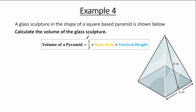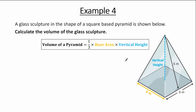First, we need the formula for the volume of a pyramid: volume equals one-third multiplied by base area multiplied by vertical height. For the base area, we find the area of the square: the length is 6 m, so the area equals 6 multiplied by 6, which is 6 squared. The vertical height is h, which we need to find. So the volume equals one-third multiplied by 6 squared multiplied by h. To find h, we note that the vertical height meets the base at the center of the base.